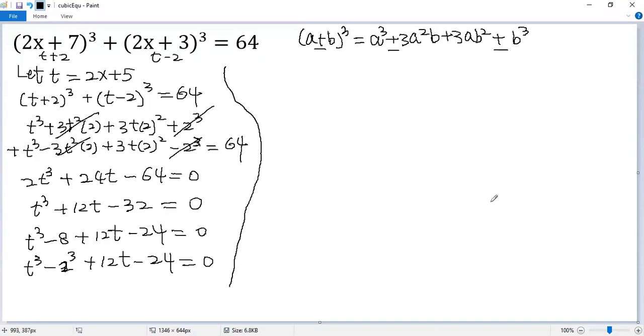Now for the first two terms, we can use difference of cubes formula: a³ - b³ = (a-b)(a² + ab + b²).